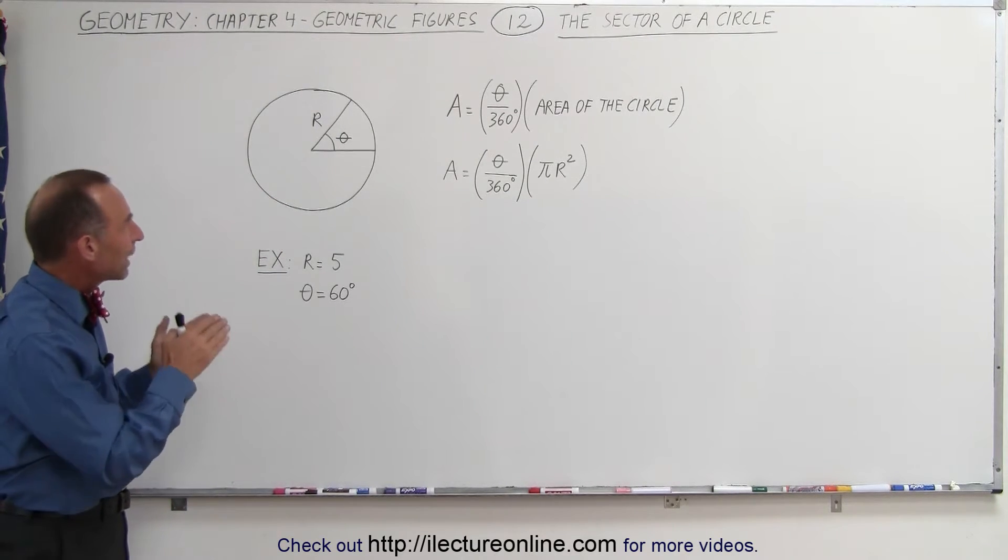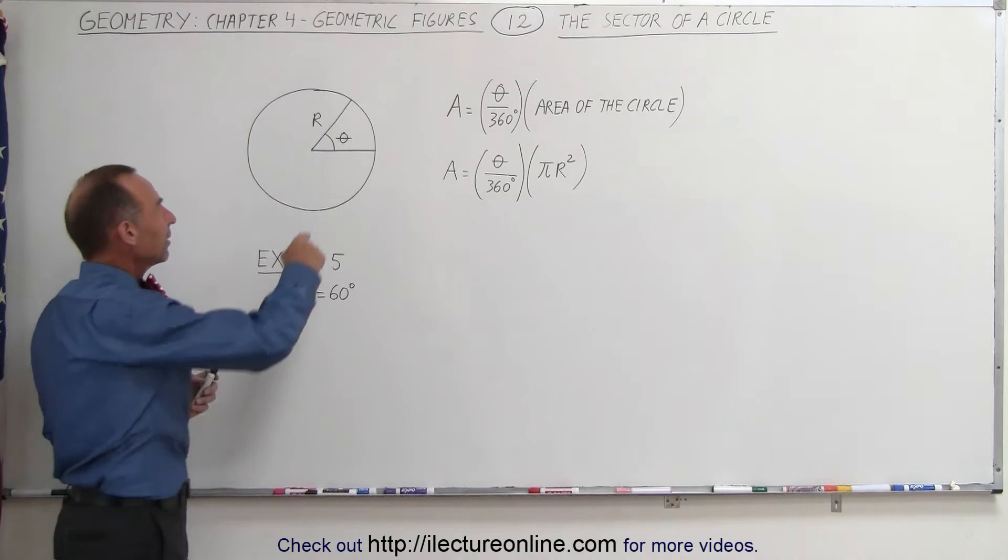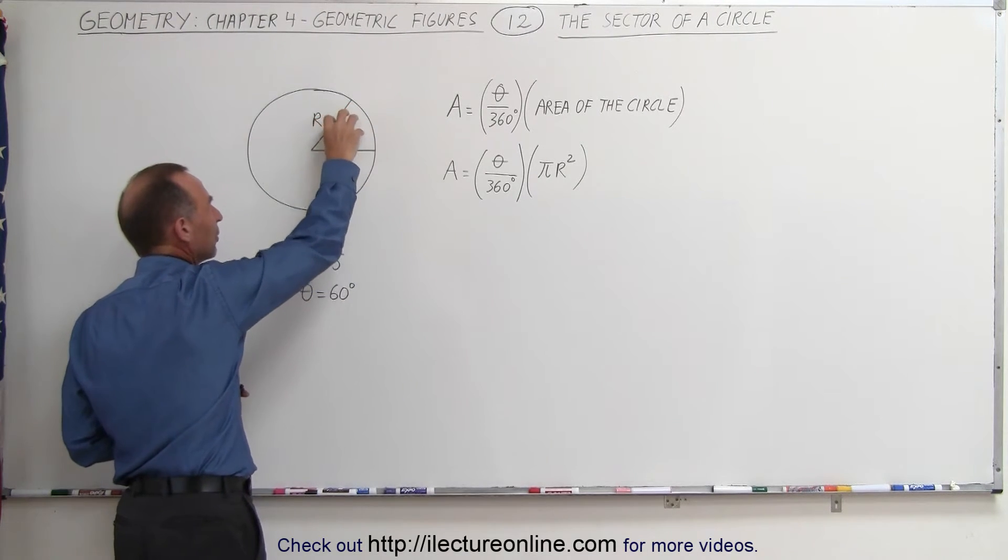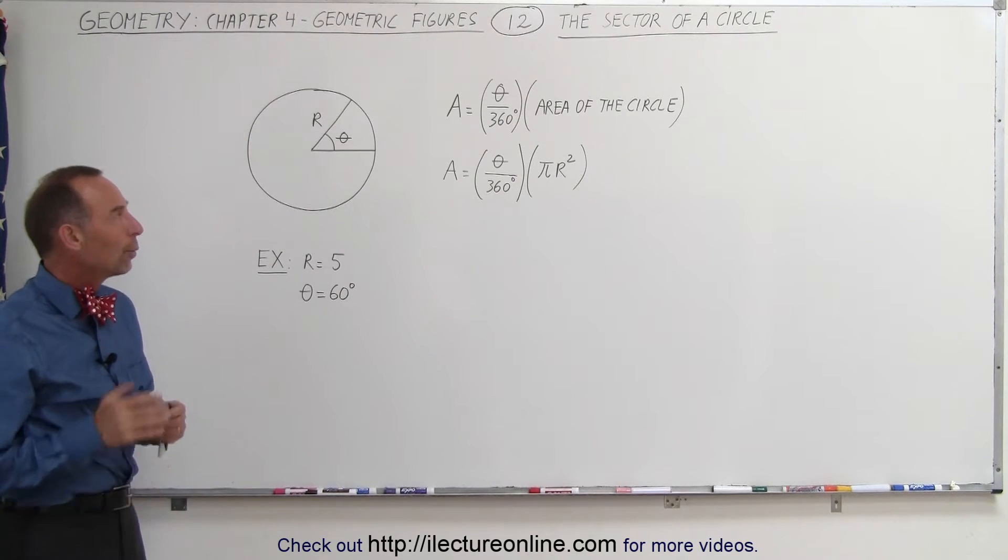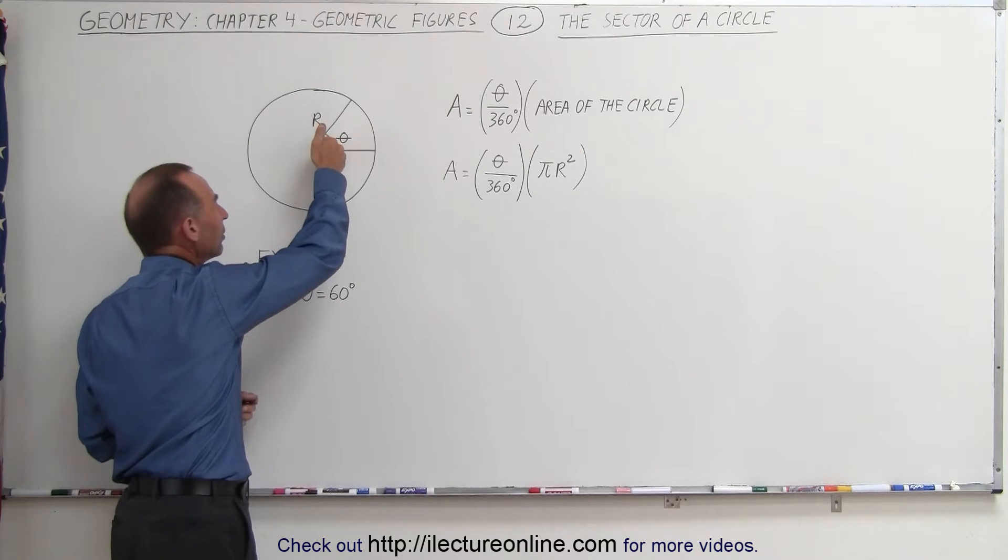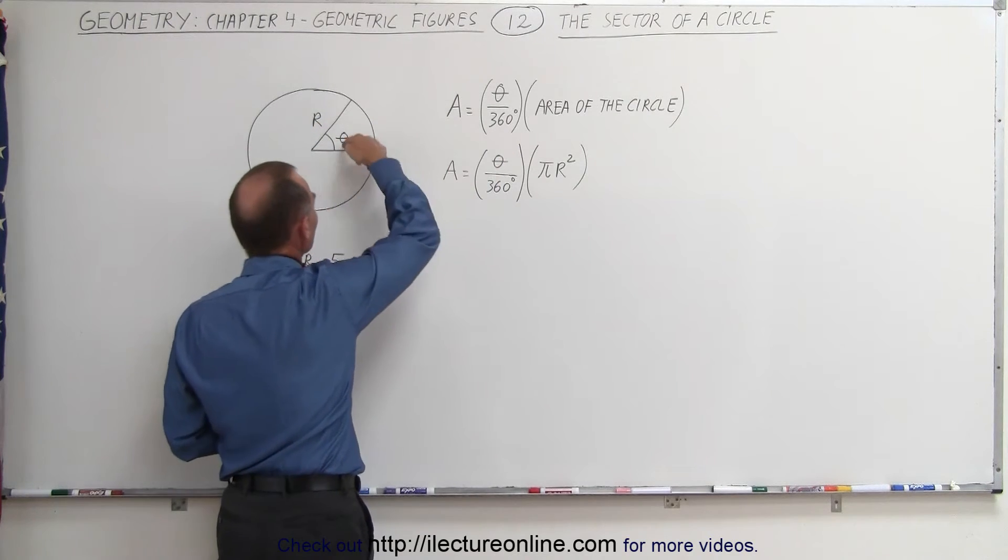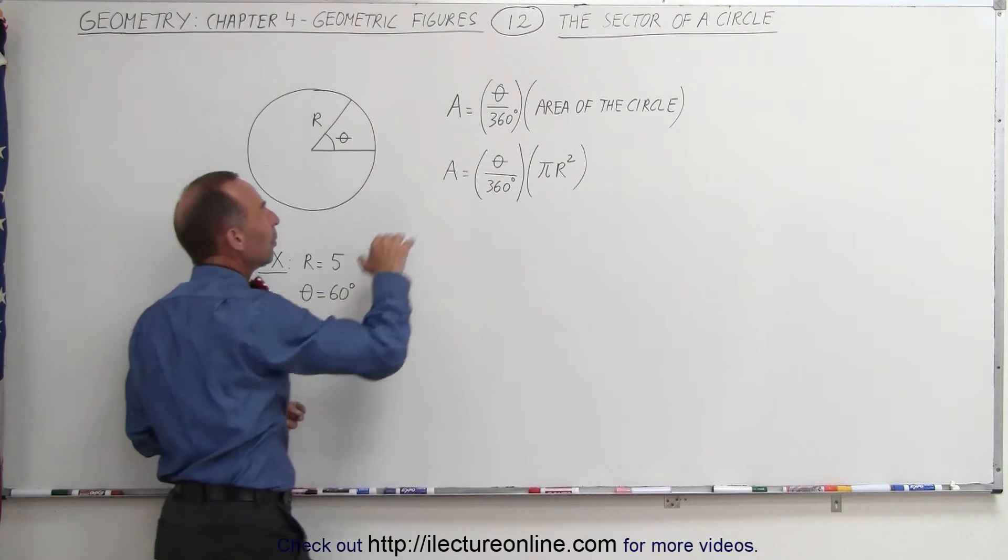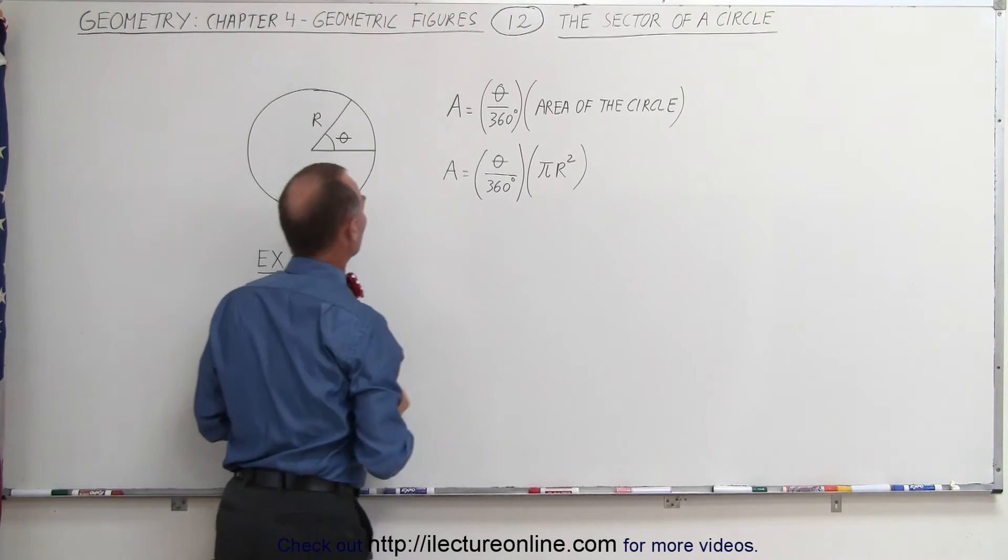If we want to know the area of that, and by the way, this section here is called a sector of a circle. We can find that by taking the ratio of the size of the angle to the circle of 360 degrees and multiply that times the area of the circle.